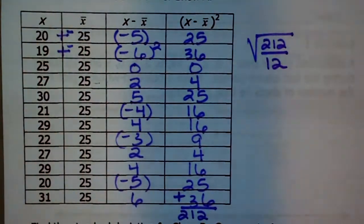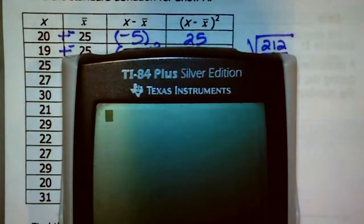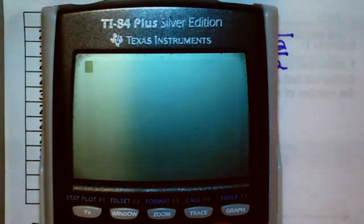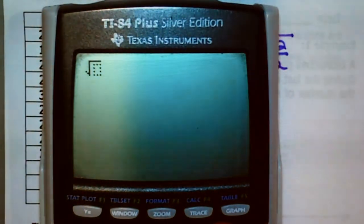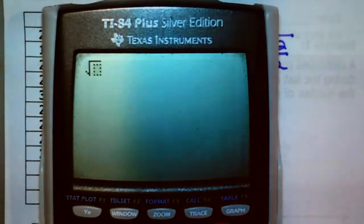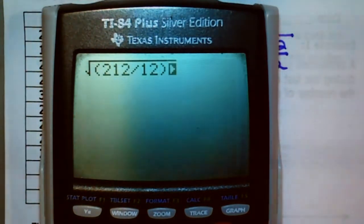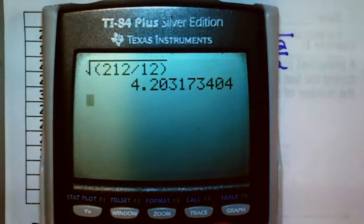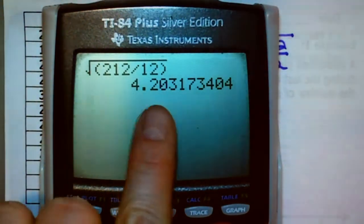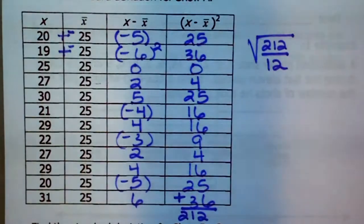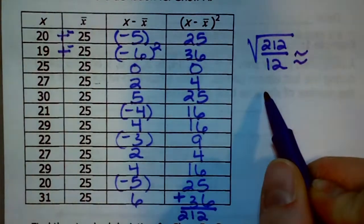In your graphing calculator, to get the square root, hit second, x-squared, and it will bring up your square root symbol. It's a good habit to put parentheses around what you want done together, so type 212 divided by 12 in parentheses. Hit enter and we end up getting a lengthy decimal. Rounding to the tenths place — 4.20 — the digit next to the tenths place is 4 or less, so we leave it at 4.2.